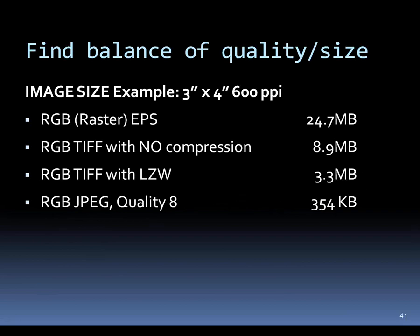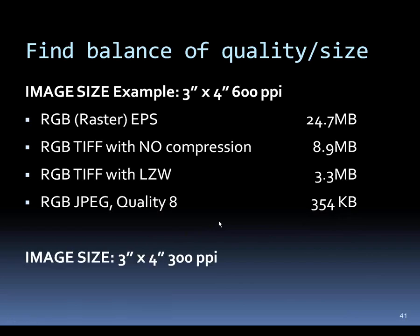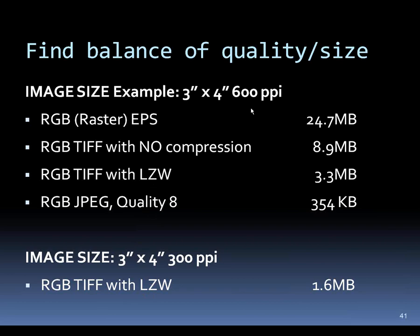Going further with JPEG compression shows how much it can reduce file sizes. If you need fast internet transfer, this same file that was 25 megabytes in EPS format can be made only 350 kilobytes using quality 8, which is medium quality JPEG—that's less than one megabyte. And that same image at 300 PPI saved as RGB TIFF with LZW was only 1.6 megabytes, compared to 3.3 megabytes at 600 PPI.